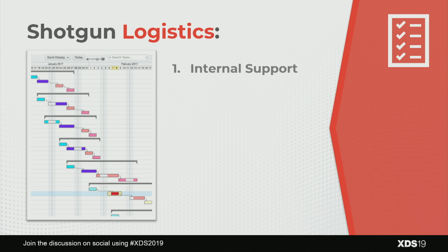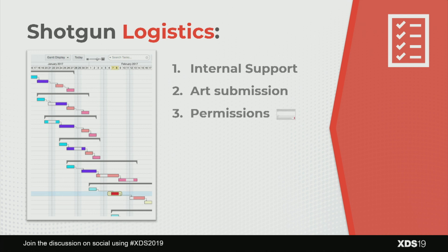Shotgun logistics: before leaving Shotgun, the biggest thing to consider with any tool is internal support. Who are the admins? Who controls permissions? How will artists submit their assets? Shotgun also has an extensive API to connect it to existing software — but do you have the engineers to implement that? Make sure you account for the full support network, whether you're using Shotgun, JIRA, or anything else.